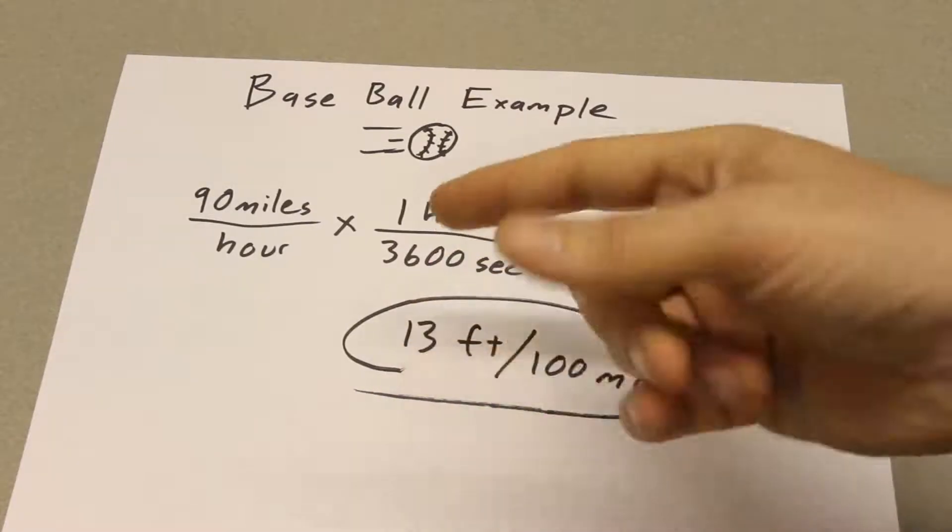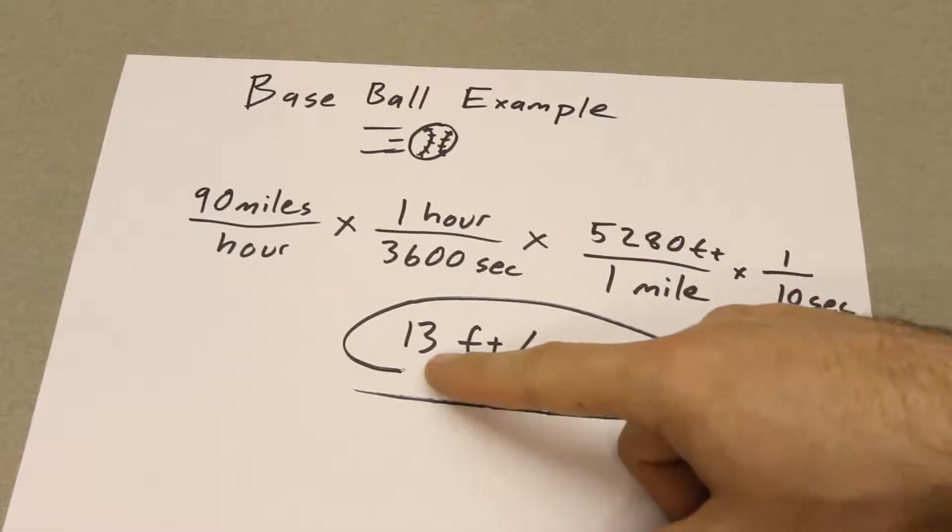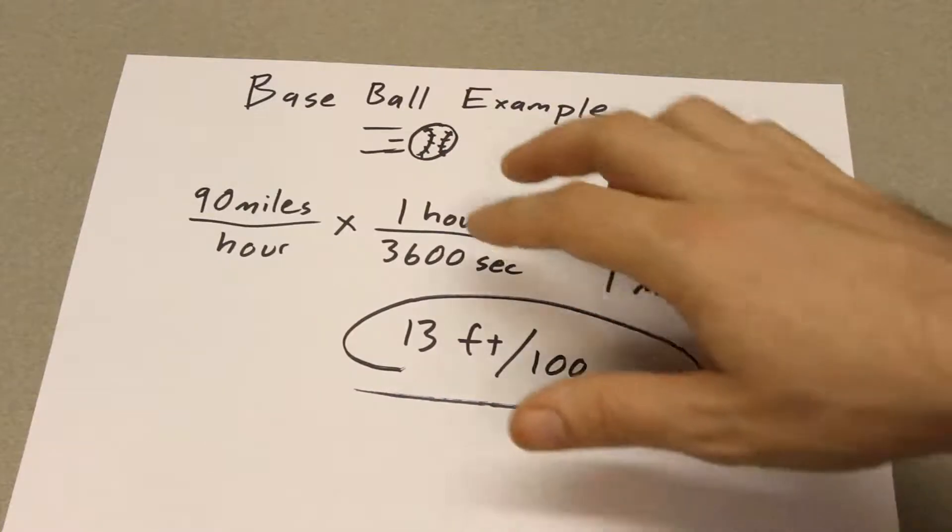That would be 0.13 feet, which is over an inch of blur on that baseball, which should be a problem in certain cases as well.